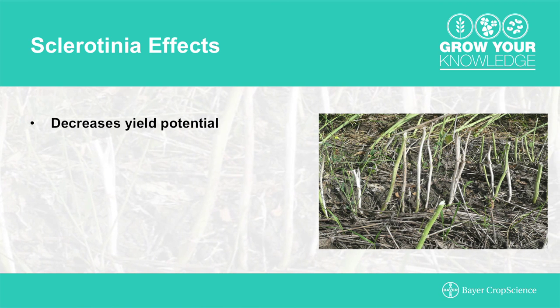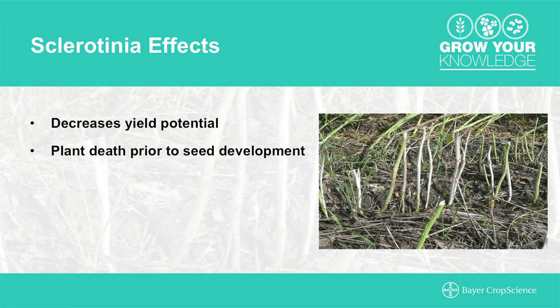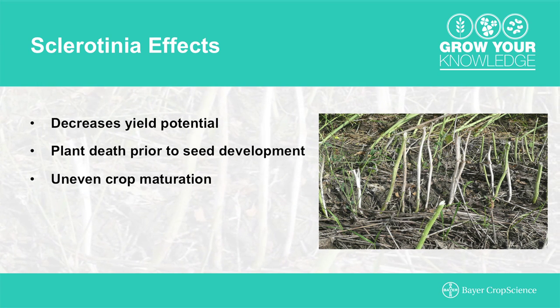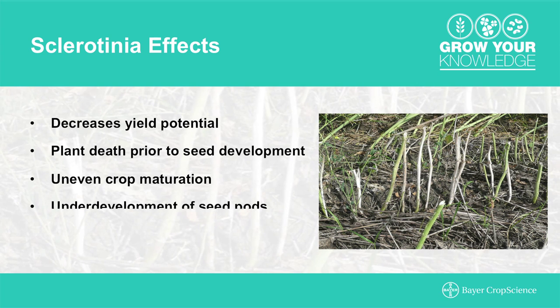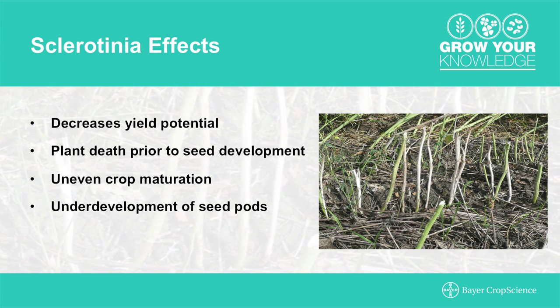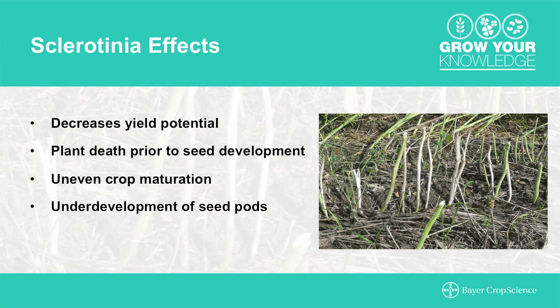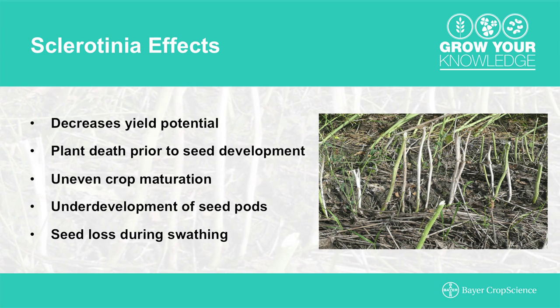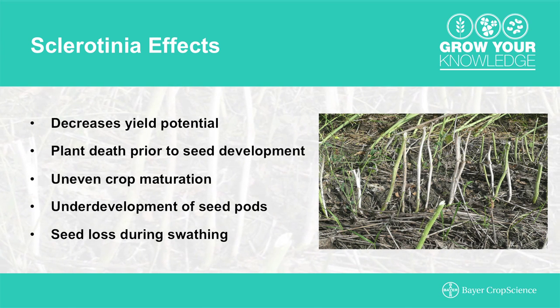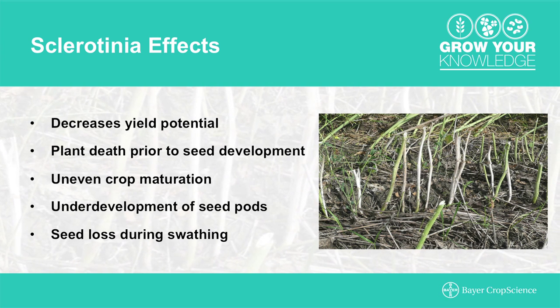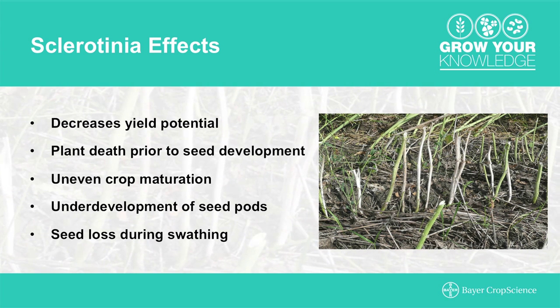As a canola grower, some of the biggest concerns with sclerotinia are decreased yield potential, death of a plant prior to seed development, which results in an uneven crop at maturation, underdevelopment of the seed pods, and reduced seed weight due to premature plant death. That can also lead to seed loss during the swathing process. The dangerous part is that once symptoms are apparent, it's too late to treat, so you need to be more proactive with addressing this disease.